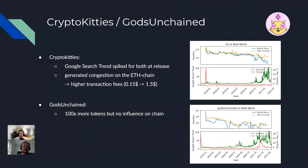For CryptoKitties and Gods Unchained, we can see that at their release date, a large number of tokens got minted at once. For CryptoKitties, this apparently had an influence on the Ethereum chain — there was a congestion, and because of this, the transaction fees increased from $0.15 to $1.50.